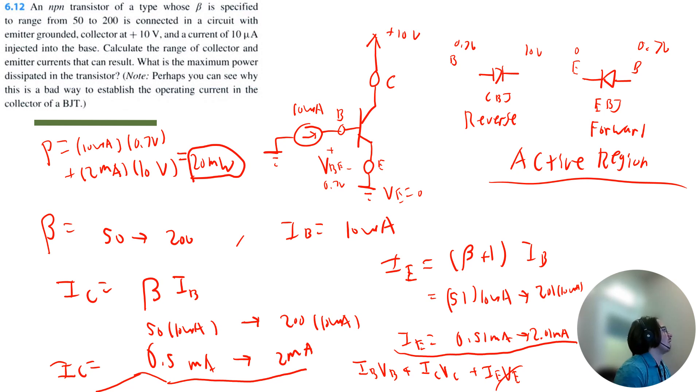Now the problem also says perhaps you can see why this is a bad way to establish the operating current in the collector. I'm not really sure what the author is trying to demonstrate there. So if anyone has any comments on that, I would love to hear your take in the comment section.